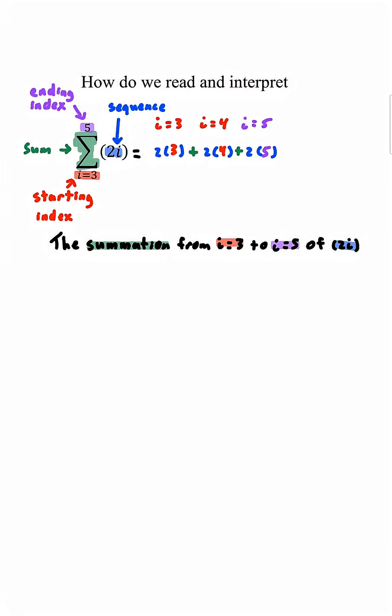Now what is the summation for all of this? We're going to add them all up. So 2 times 3 plus 2 times 4 plus 2 times 5 is equivalent to 6 plus 8 plus 10, which is 24.